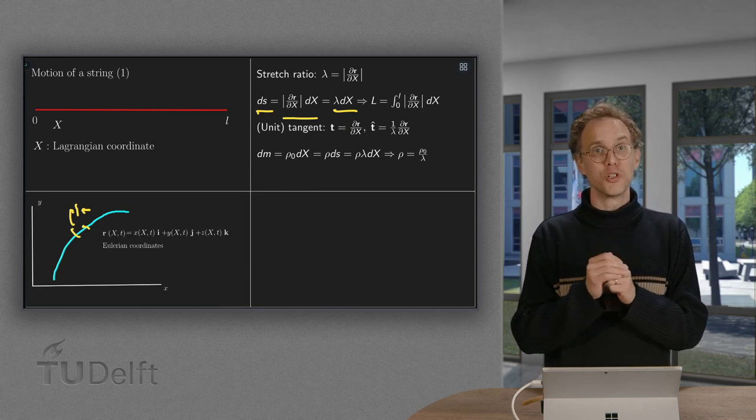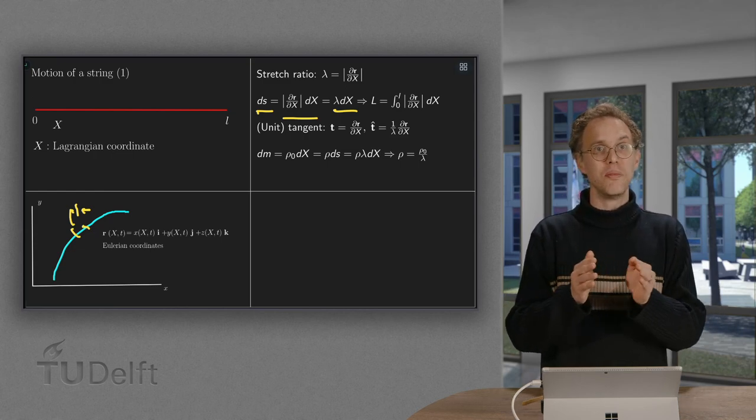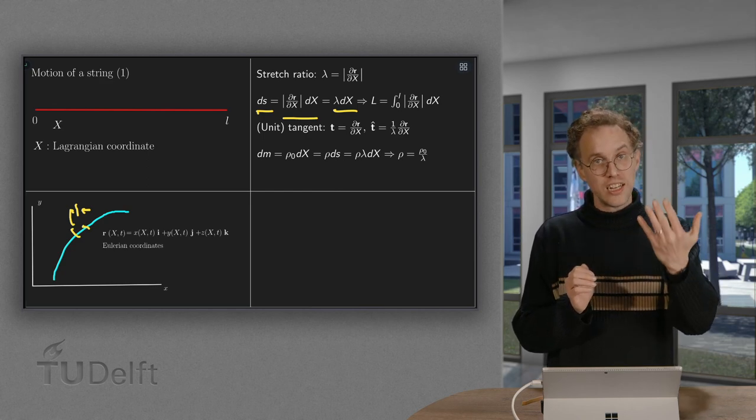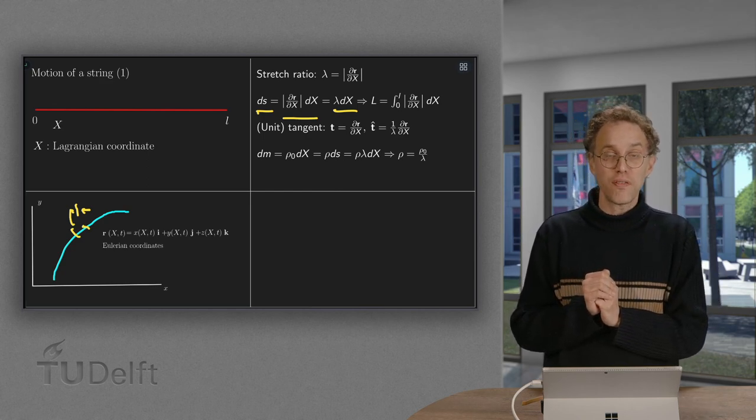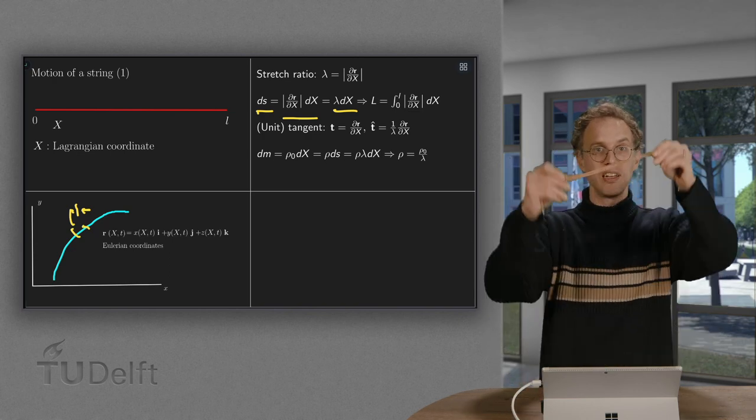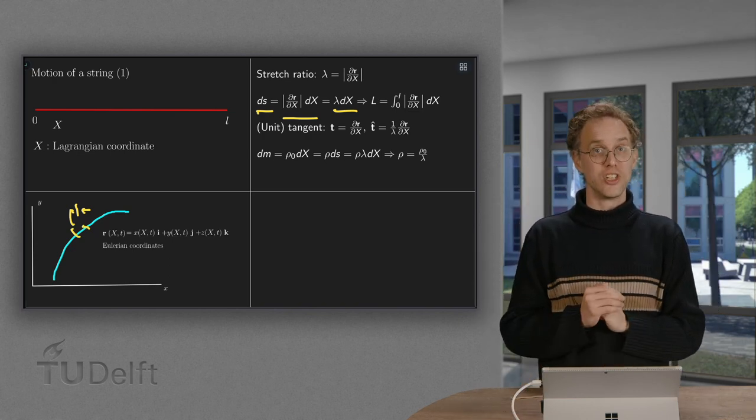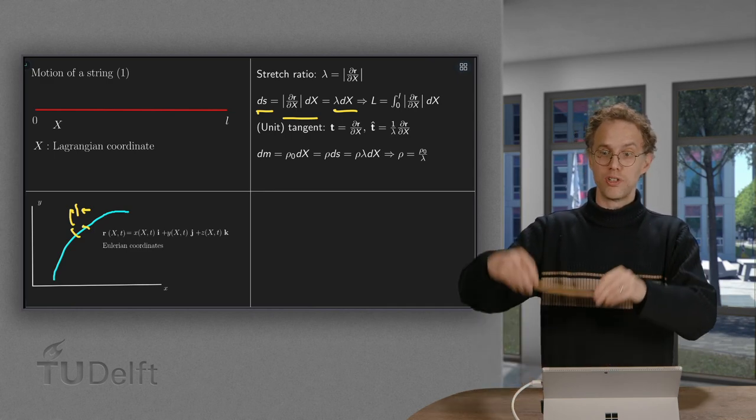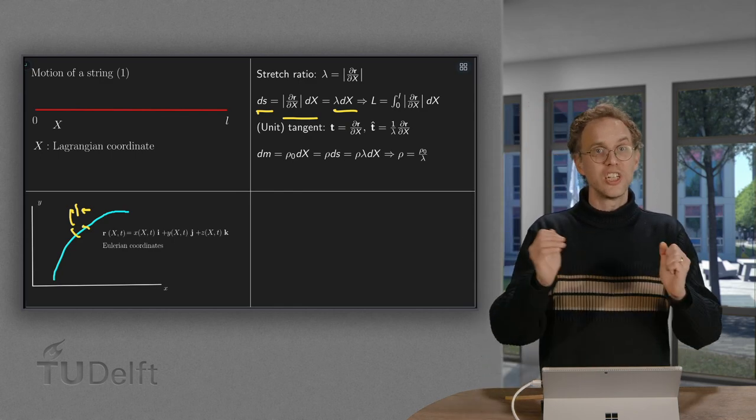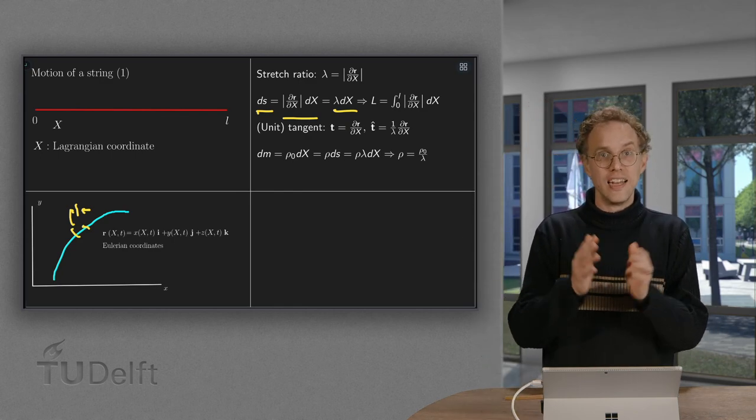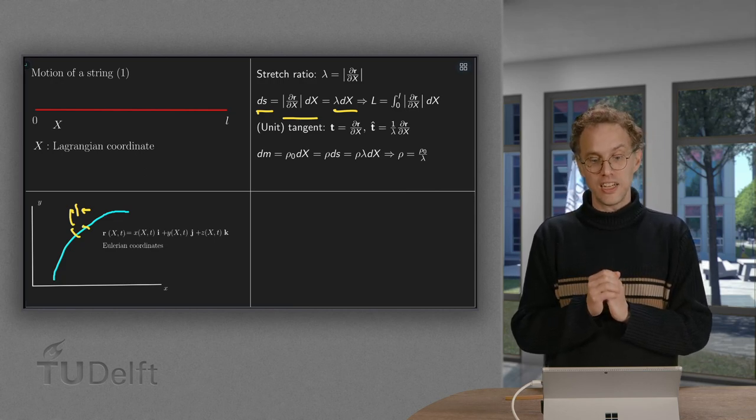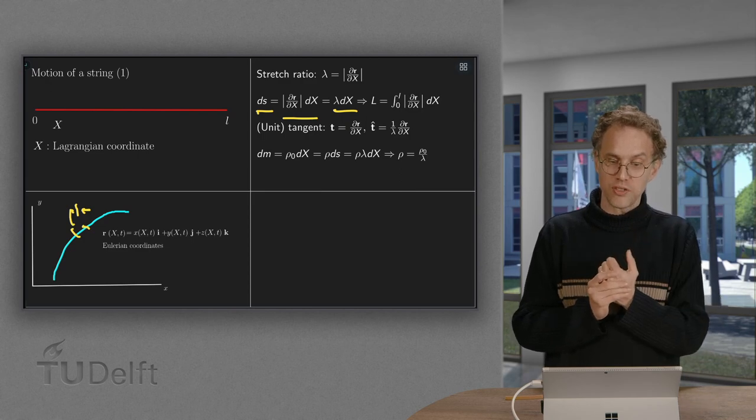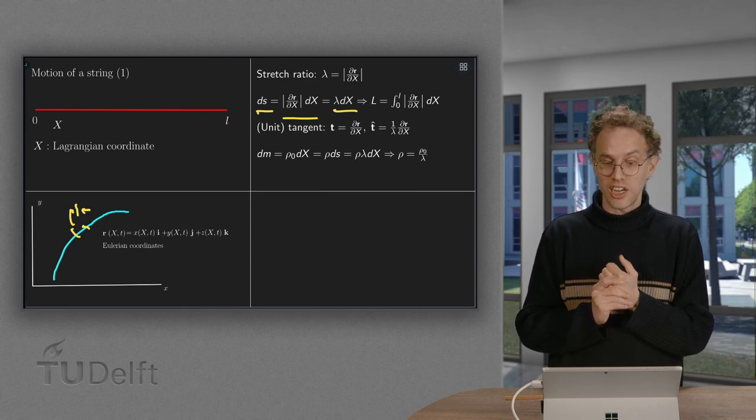So what does this tell us? Well, if our lambda equals 1, then our ds equals dx, they are the same. So the distance in the new configuration is the same as the distance in the reference configuration. We are not stretching the string. However, if our lambda becomes bigger than 1, we are stretching our string, and the ds becomes larger than the dx, which means that this lambda is called a stretch ratio.